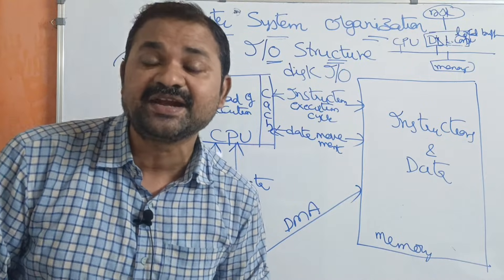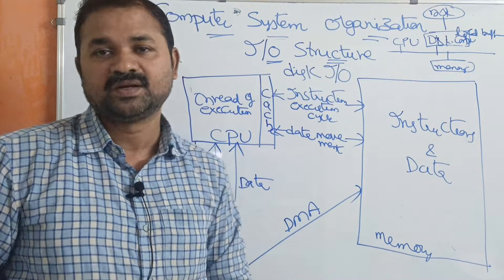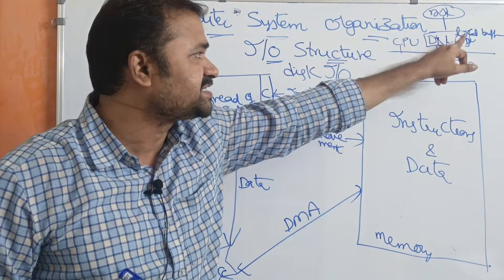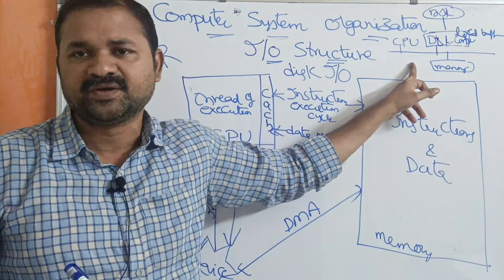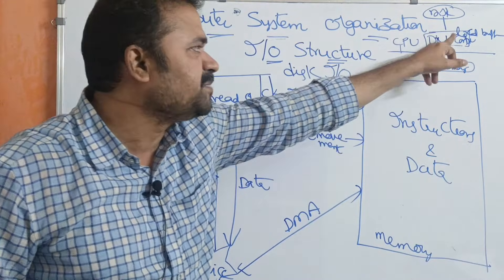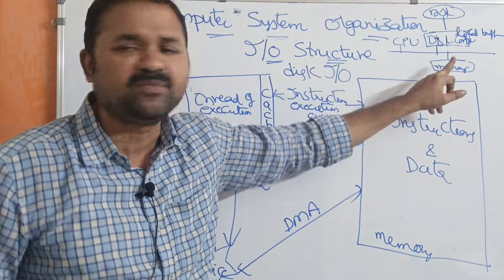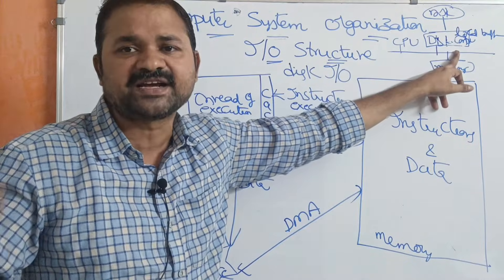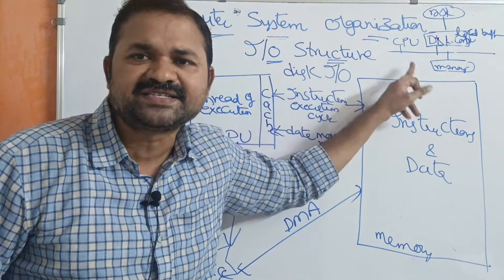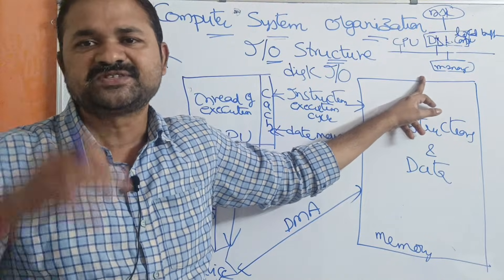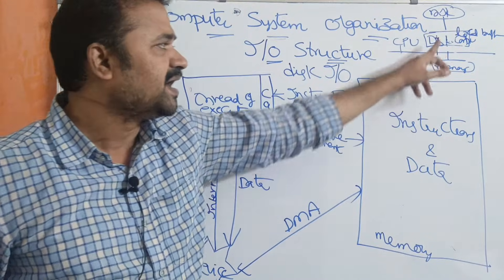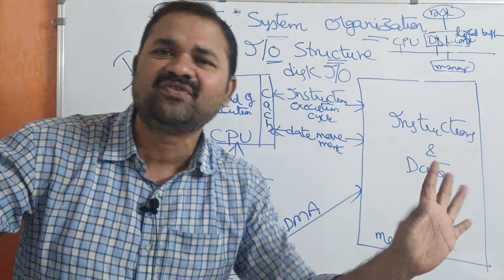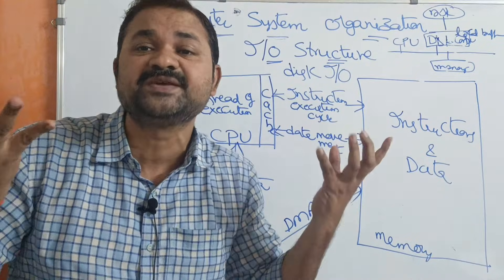The reason is that interrupt-initiated I/O transfers data byte by byte. Whenever there is one byte of data, the device controller sends an interrupt signal to the CPU, the CPU stops its work and transfers that one byte to memory. Once again, if the disk controller has one more byte, it sends another interrupt signal to the CPU, and CPU stops its work again to transfer another byte. This is a very inefficient approach for transferring large amounts of data.